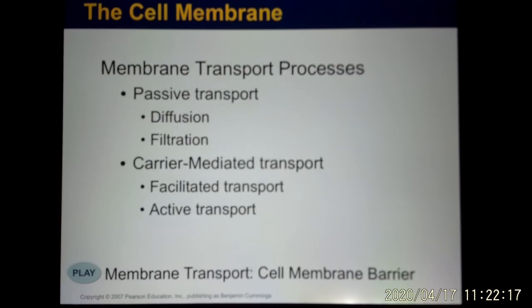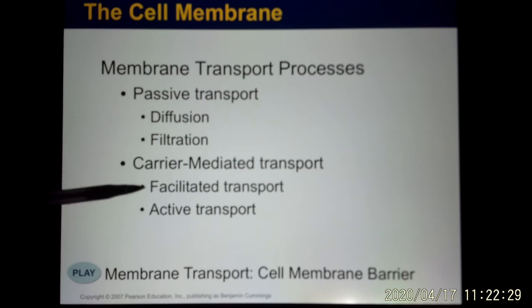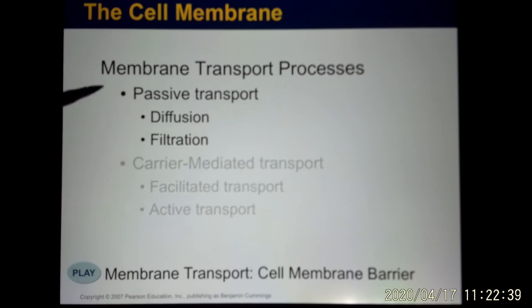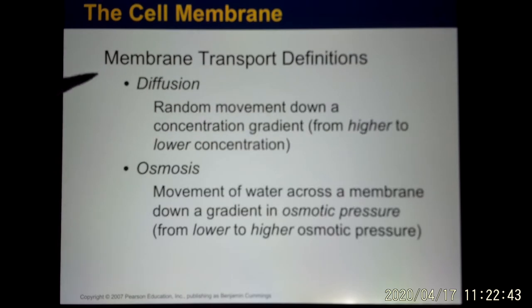The processes for molecules to cross the cell membrane can be divided into passive and carrier-mediated. Passive includes simple diffusion and filtration. Carrier-mediated requires membrane proteins and includes facilitated transport and active transport. The easiest passive process is diffusion — molecules naturally move from a high concentration area to a low concentration area.